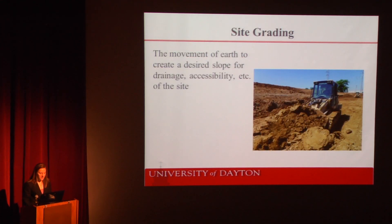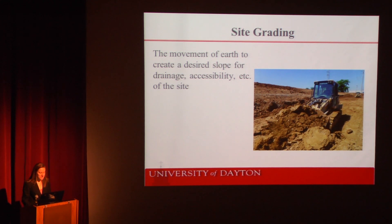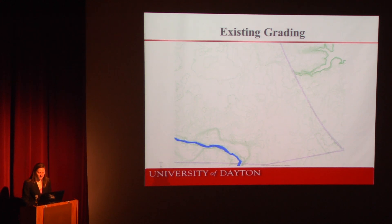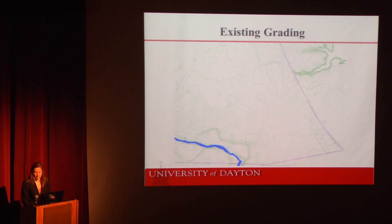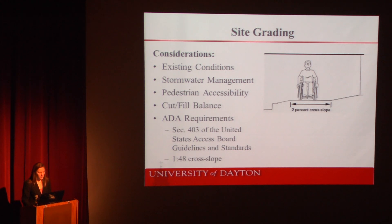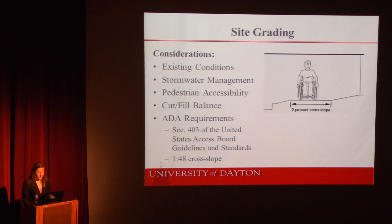Grading is the movement of earth to create a desired slope for drainage, utility placement, accessibility, and other components of the site. The existing terrain of our site is relatively flat, averaging a 1% slope and sloping from the northwest corner to the southeast corner of the property, with a small portion of the southwest corner sloping south towards Bradford Creek. When grading the site, the site civil team had to consider existing conditions, stormwater management, pedestrian accessibility, a cut and fill soil balance, and ADA requirements, which state that a maximum 2% cross slope running perpendicular to the path of travel can be used.